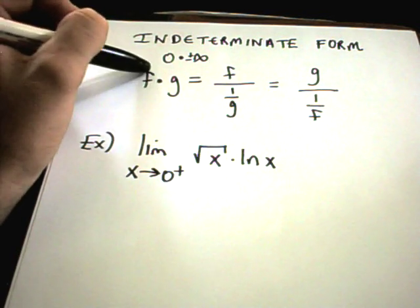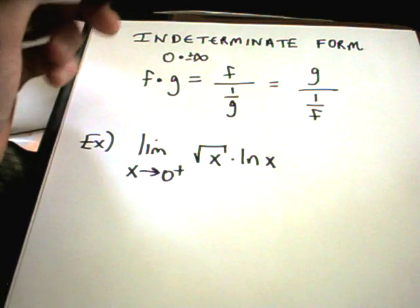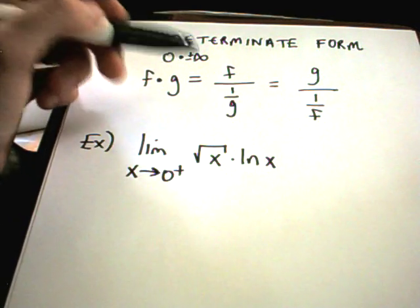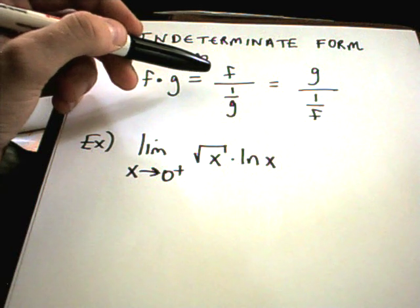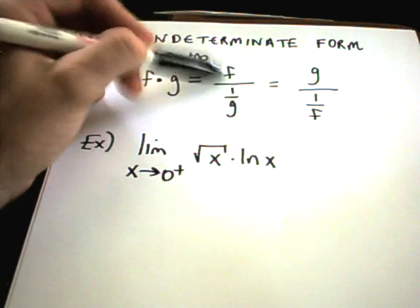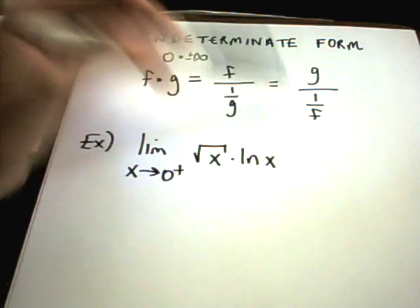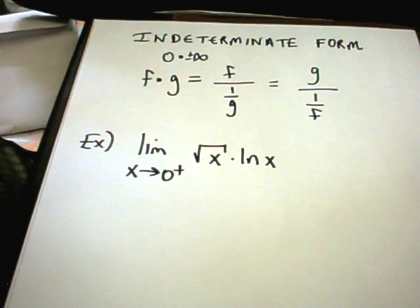The idea is you have two functions, f of x times g of x. What we're going to do is make this into an indeterminate fraction by leaving one in the numerator and putting one over the other in the denominator. It doesn't matter which one you put on top or bottom.